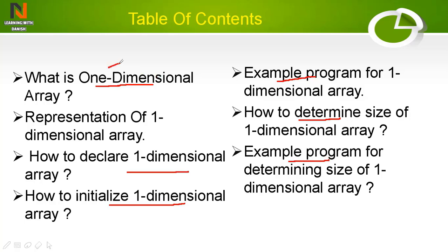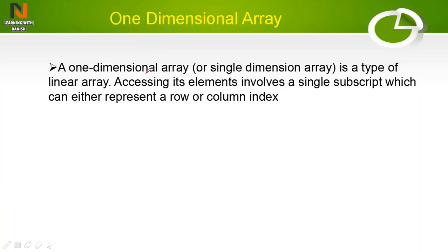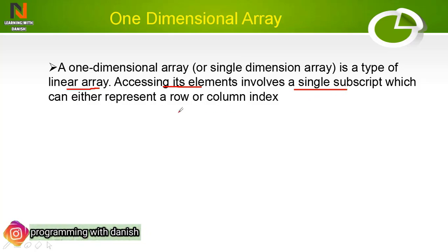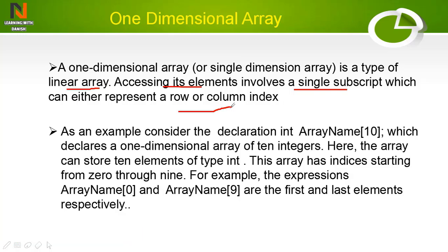A one-dimensional array is basically a type of linear array — it means it has a linear structure. Accessing its elements involves a single subscript, meaning it has only one index, which represents a row or a column. As an example, consider the declaration: int is the data type, array name is the array name, and 10 is the array size.